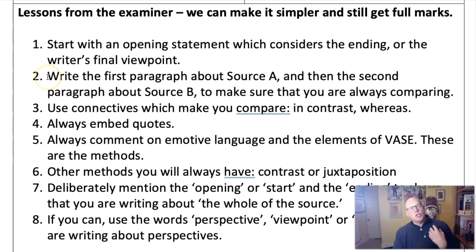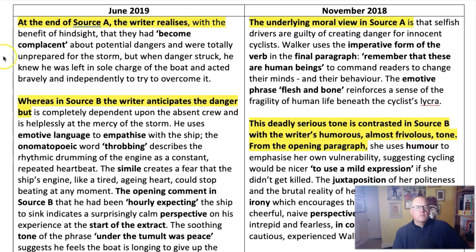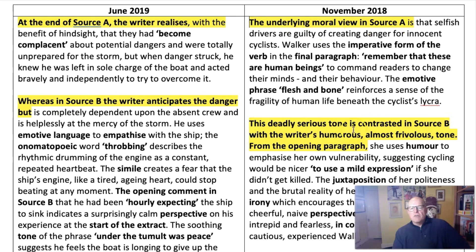Technique number two is much easier. Write the first paragraph about source A and then the second paragraph about source B to make sure that you are always comparing. And this is what it looks like. You begin with 'at the end of source A,' and then for your next point, 'whereas in source B the writer anticipates the danger.' Or you begin with source A: 'this deadly serious tone is contrasted in source B with the writer's...'